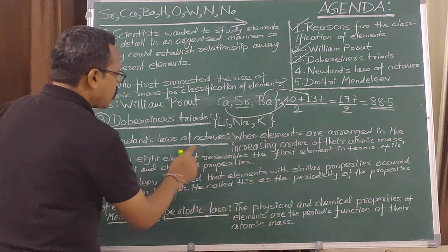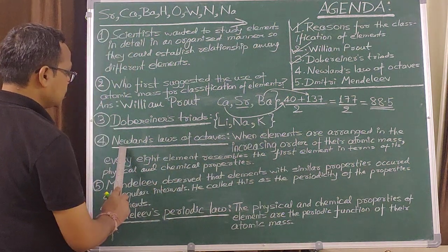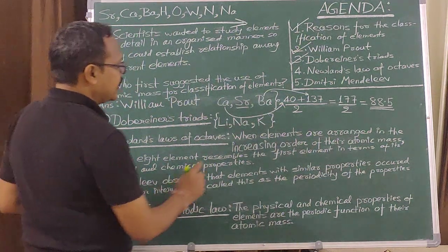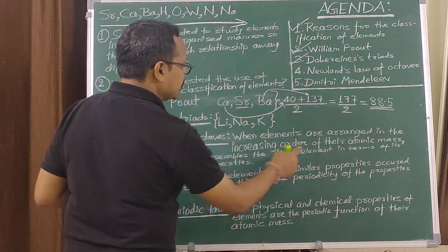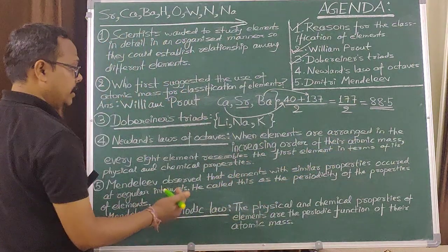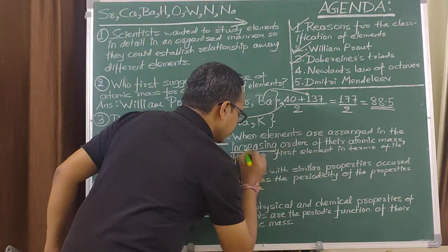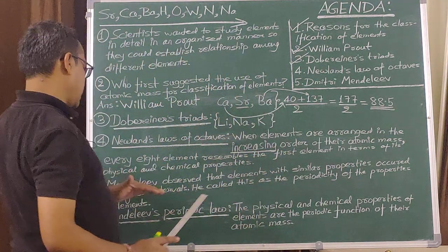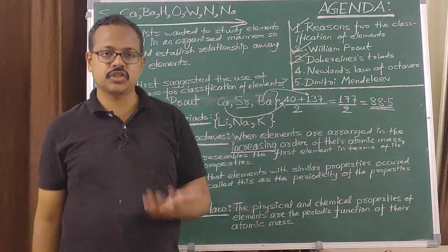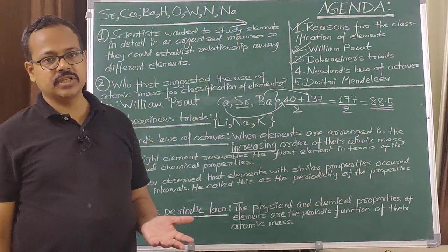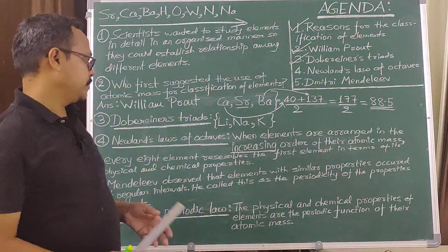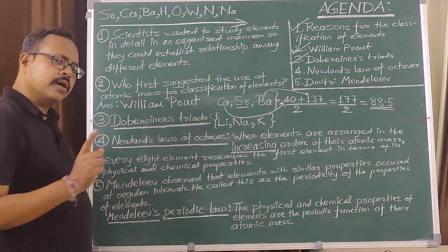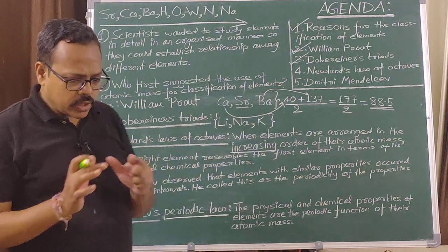This is known as Newland's law of octaves. It states: when elements are arranged in the increasing order of their atomic mass, every eighth element resembles the first one in terms of their physical and chemical properties. Increasing order is a key concept here. Newland was the first to come up with a tabular kind of structure.